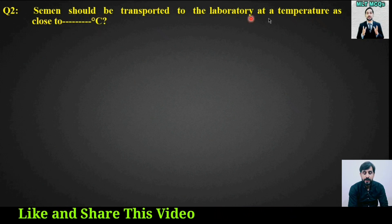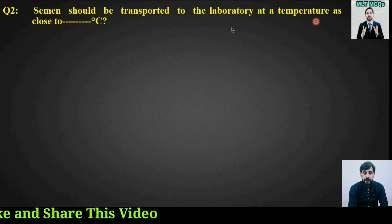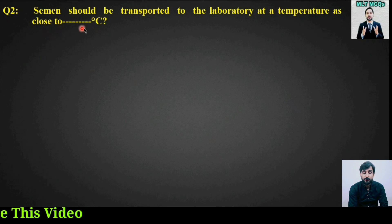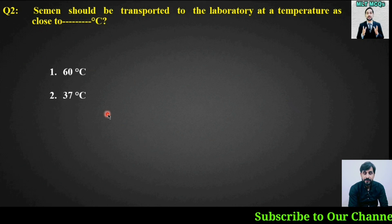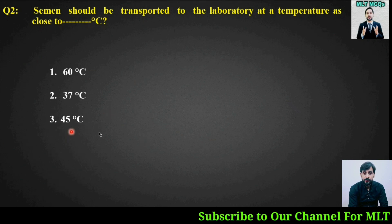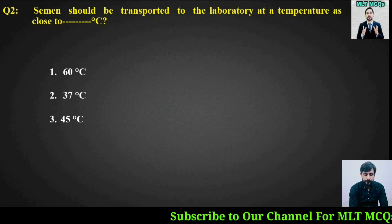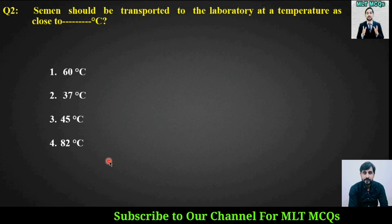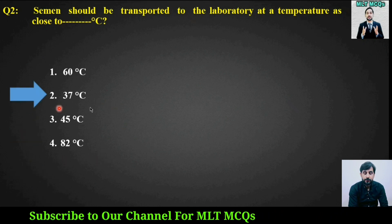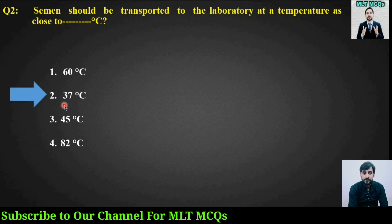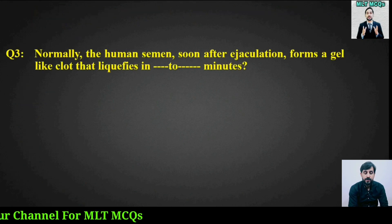MCQ number two: Semen should be transported to the laboratory at a temperature as close as to how many degrees centigrade? Options are: 60°C, 37°C, 45°C, or 82°C. The right answer is option number two — 37 centigrade.